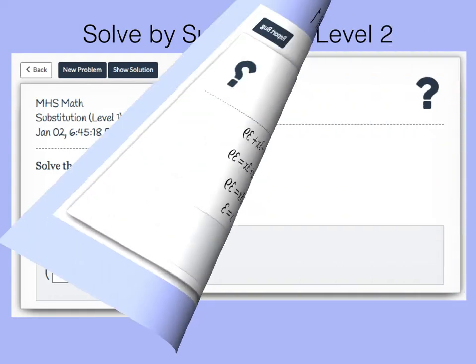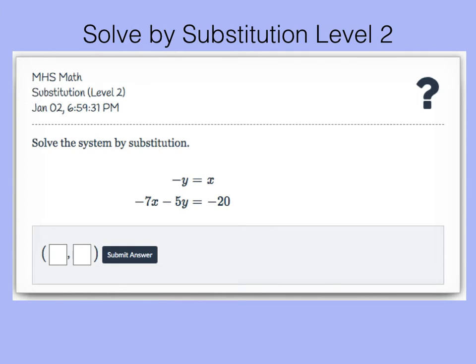Now level 2 is a little bit more challenging. One of the equations will be given. It will either say some x equals something or y equals something. I want you to look at the top equation here in terms of x. x is equal to negative y.